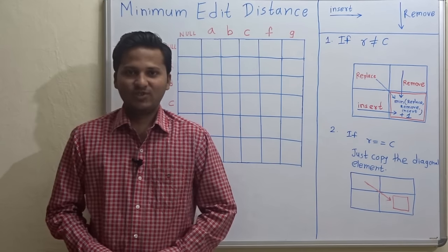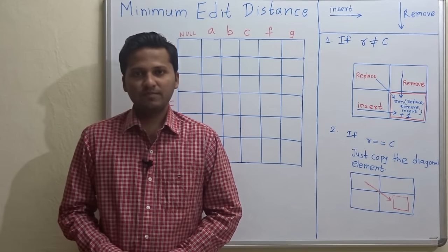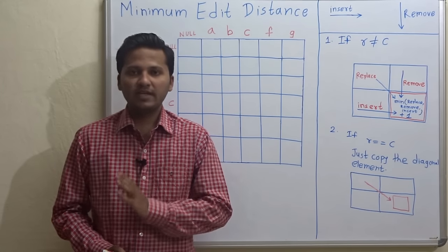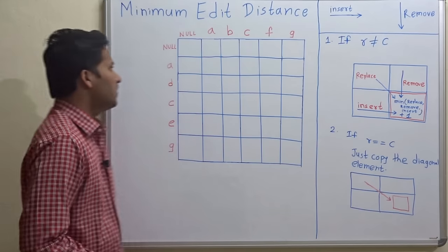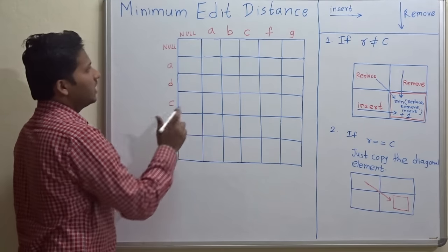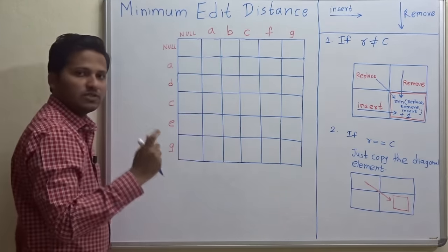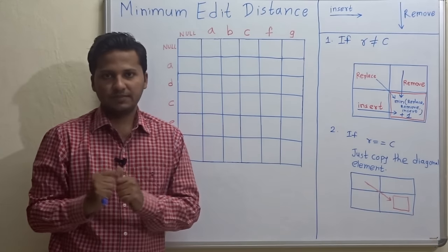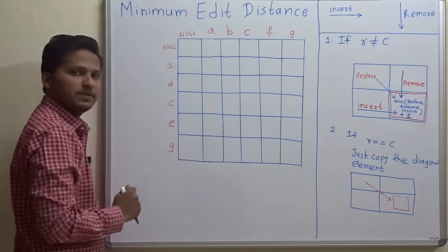Hello friends, today we are going to see a dynamic programming problem — finding out the minimum edit distance, which means we have to convert a string into another string using a minimum number of operations. Let's see how to do this.